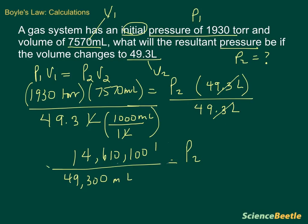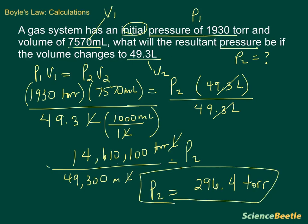And remember, our units here are torr milliliters now. Our milliliters are going to cancel, and so that leaves us with a value of P2 equal to the following number. So we take our 14,610,100 divided by 49,300. And what that gives us is a pressure value of 296.4. And this is going to be in torr. And so here is the answer for this problem.